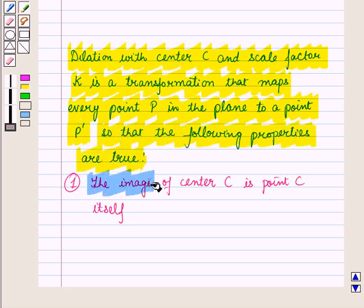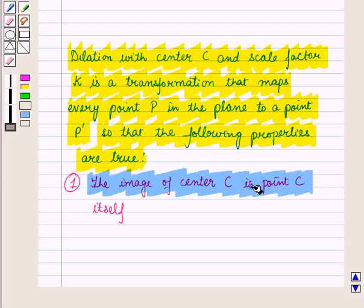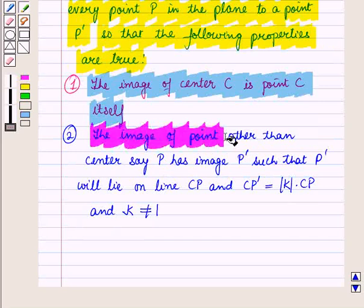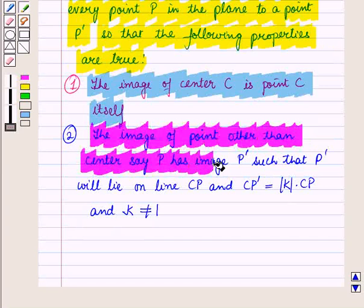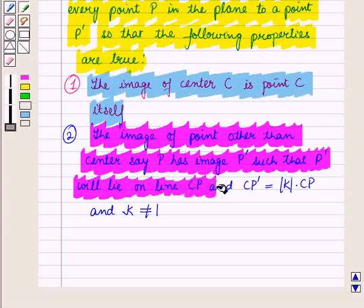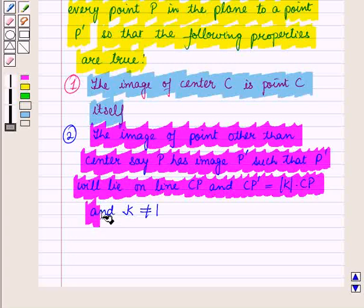First, the image of center C is point C itself, and the image of point other than center, say P, has image P' such that P' will lie on line CP and CP' is equal to absolute value of k times CP, and k is not equal to 1.